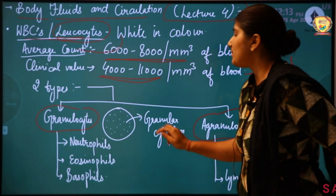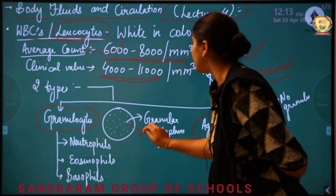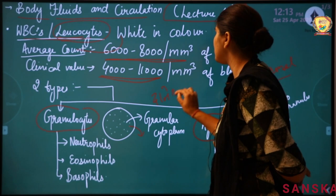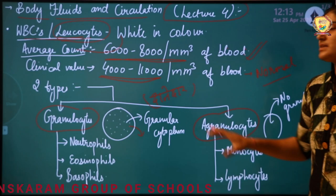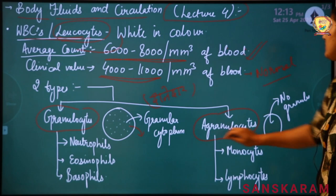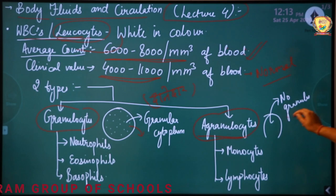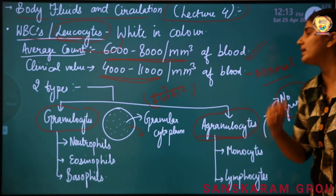Granulocytes are cells whose cytoplasm contains some granules — 'granular' means grainy. So these WBCs have some protein granules present in their cytoplasm. On the other hand, agranulocytes are WBCs whose cytoplasm has no granules — their cytoplasm is clear.